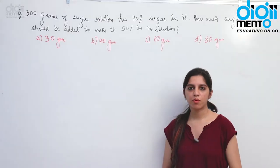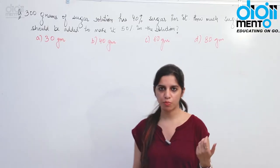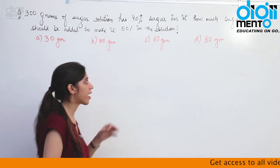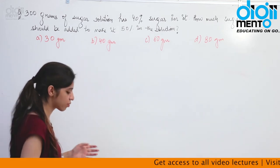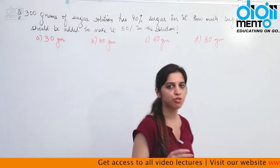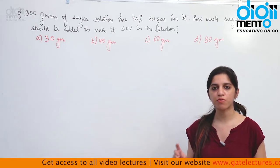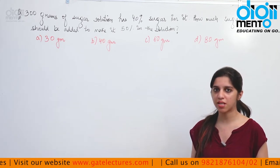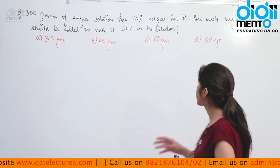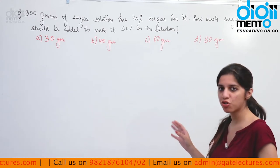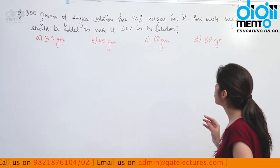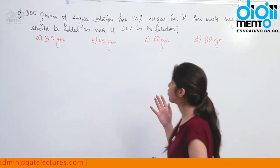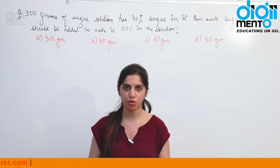Hello everyone! We are going to look at some more questions from percentages that we have already seen. So have a look at this question. It says that there is a sugar solution — sugar solution basically consists of sugar and water. The total solution is 300 grams, of which 40% content is sugar. They are asking that if they want to concentrate the solution to have 50% sugar, how much sugar should be added.